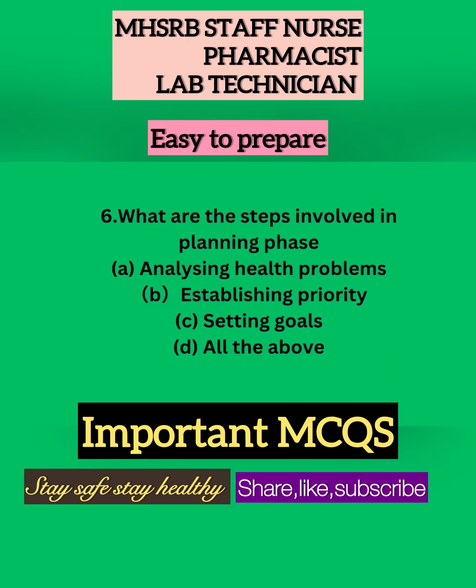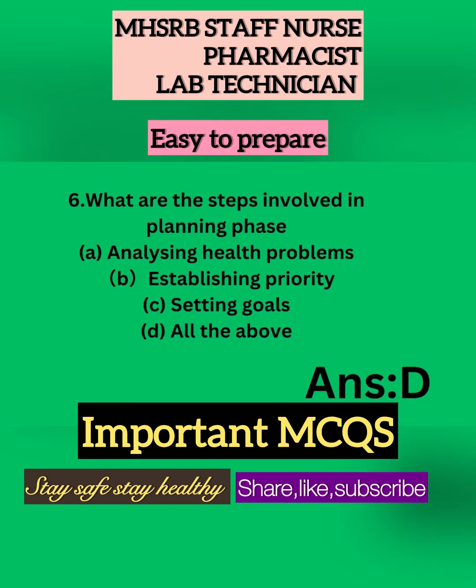What are the steps involved in the planning phase? a) Analyzing health problems, b) Establishing priority, c) Setting goals, d) All of the above. The planning phase has multiple steps. Yes, the answer is d) all of the above — first you analyze health problems, then establish priority, then set goals, and based on that you can start the treatment.